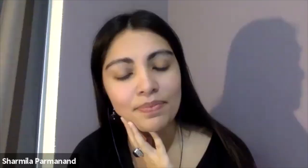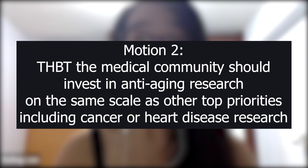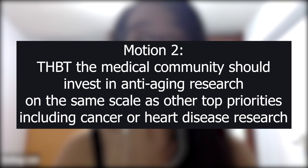The second motion is: 'This house believes that the medical community should invest in anti-aging research on the same scale as other top priorities including cancer or heart disease research.' We'll start with proposition first. Looking at this motion, my first question is: what exactly is the problem we're trying to solve here? We want to problematize aging and put it on the same scale or framework as all these other diseases that we seem to prioritize.